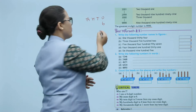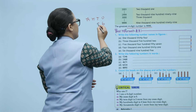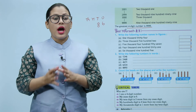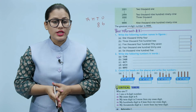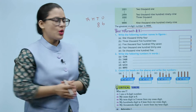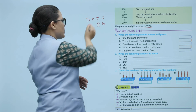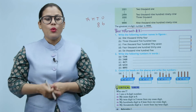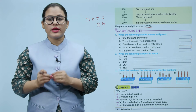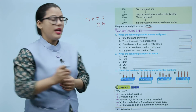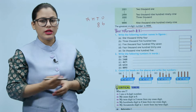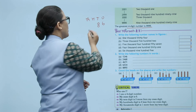That means six plus two equals eight. My hundreds digit is four less than my ones digit. Aap jo hundreds place pe jo digit hai, woh ones place pe jo digit hai, usse four less than hai — yani chaar kam hai. Yani six minus four equals two.